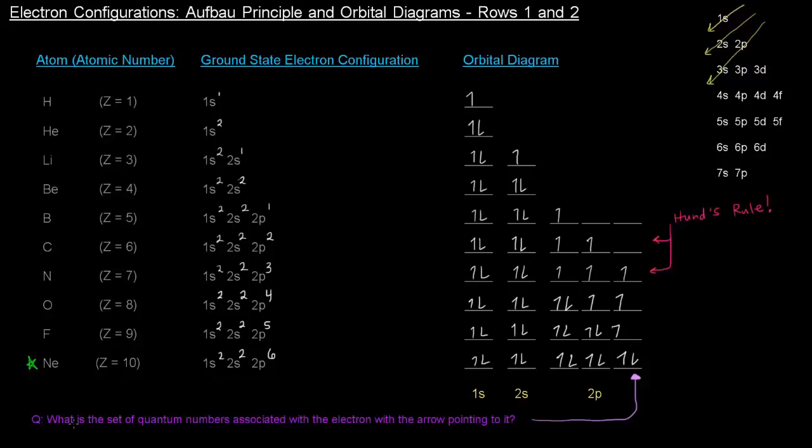Now I've got a question down here. What is the set of quantum numbers associated with the electron with the arrow pointing to it? So this electron right here, what are the quantum numbers associated with it? So it's asking basically what the n value is, what the l value is, what the m sub l value is, and what the m sub s value is. Well, n is 2 here because of 2p.